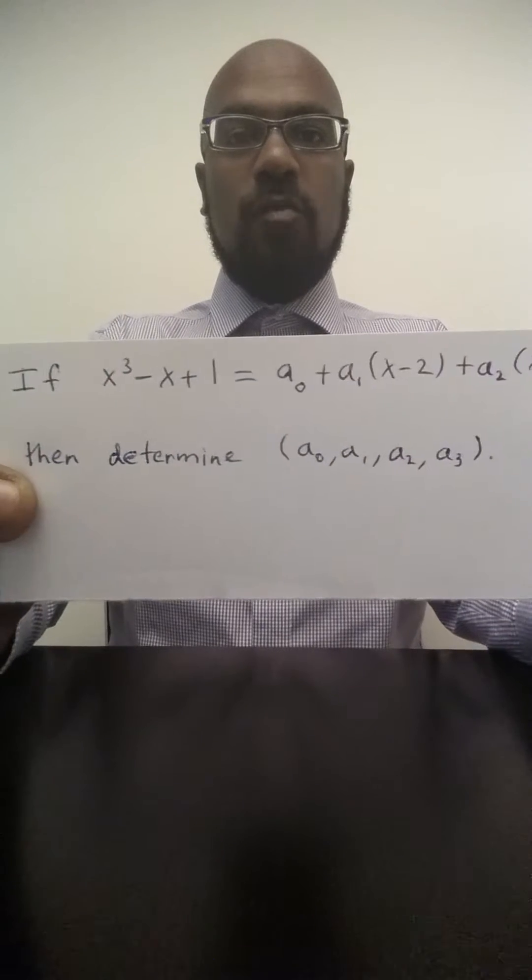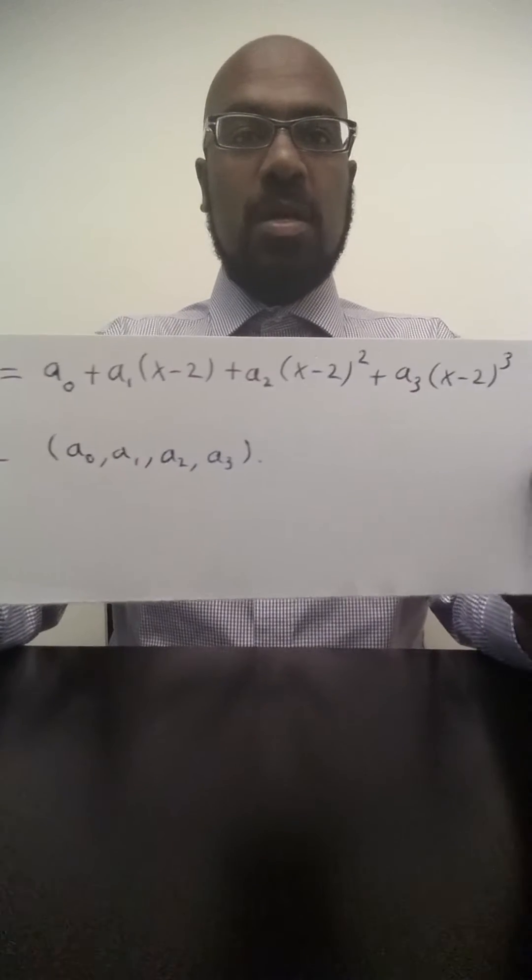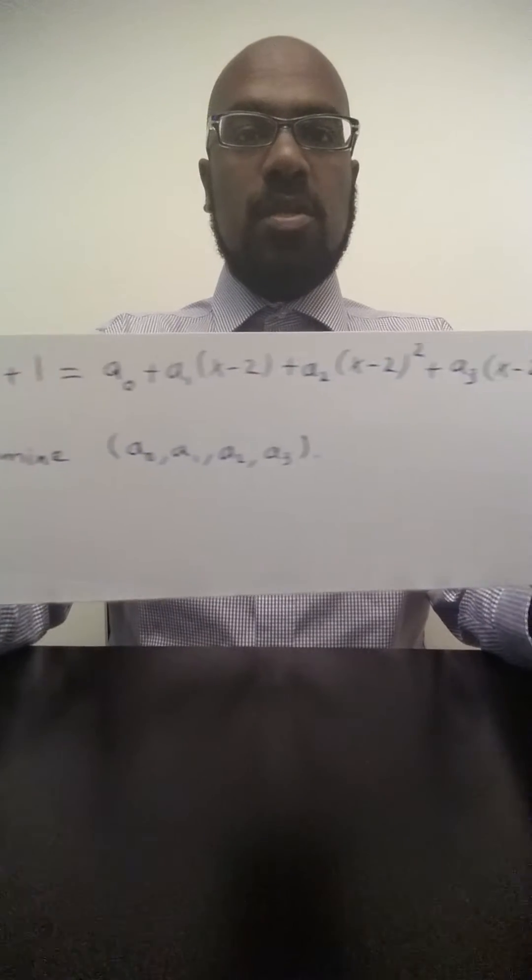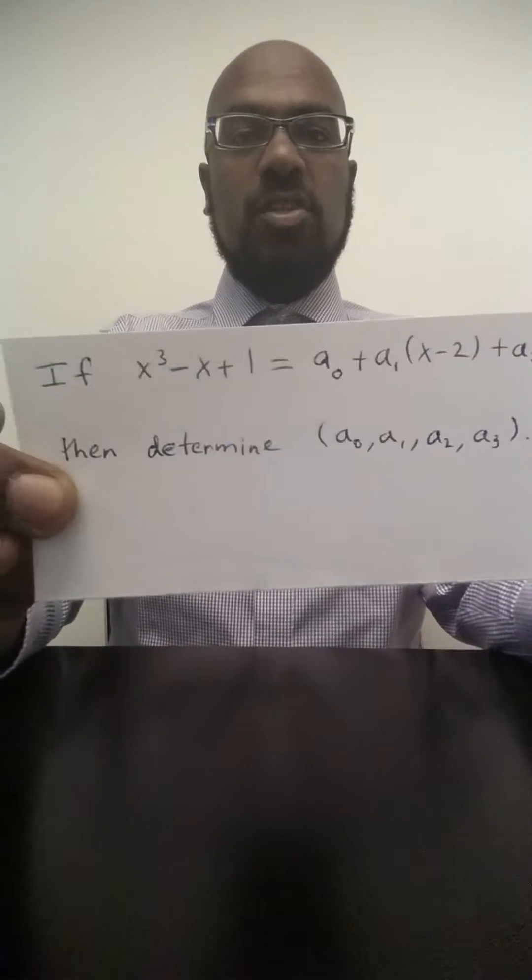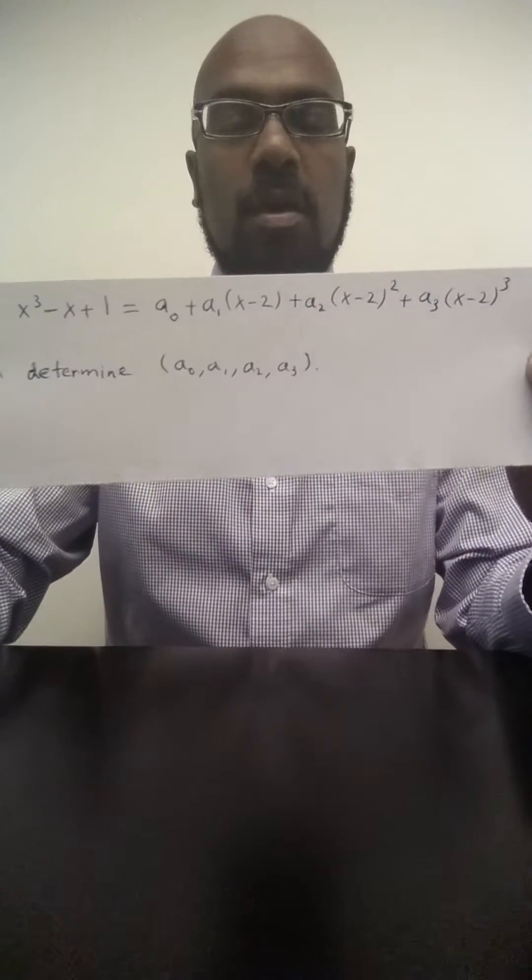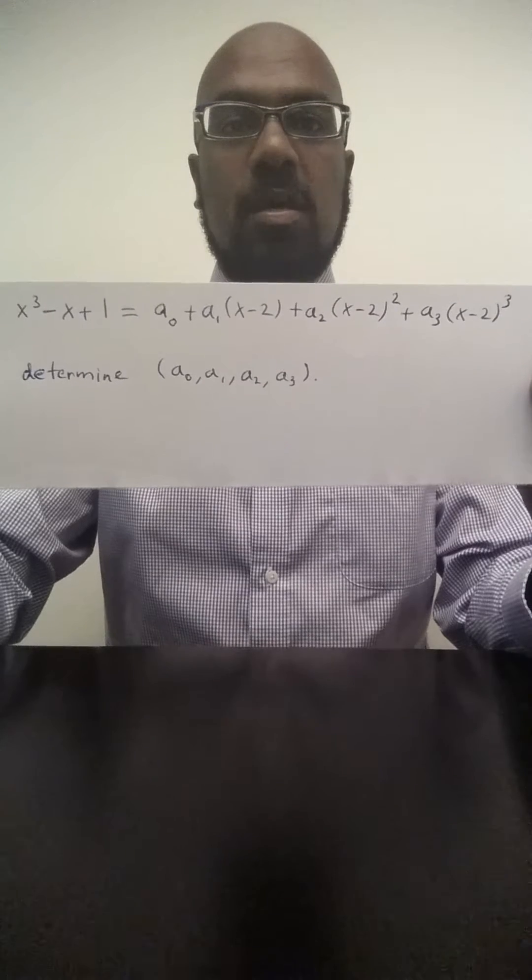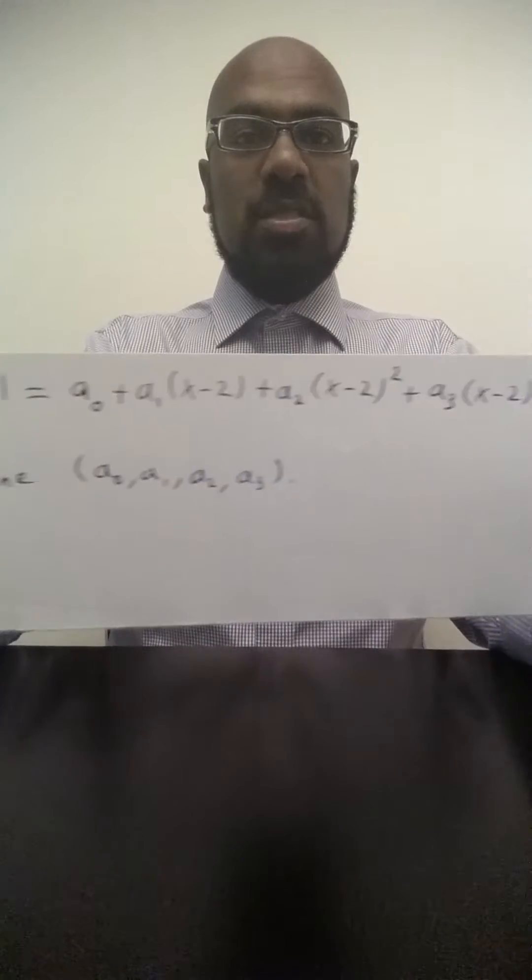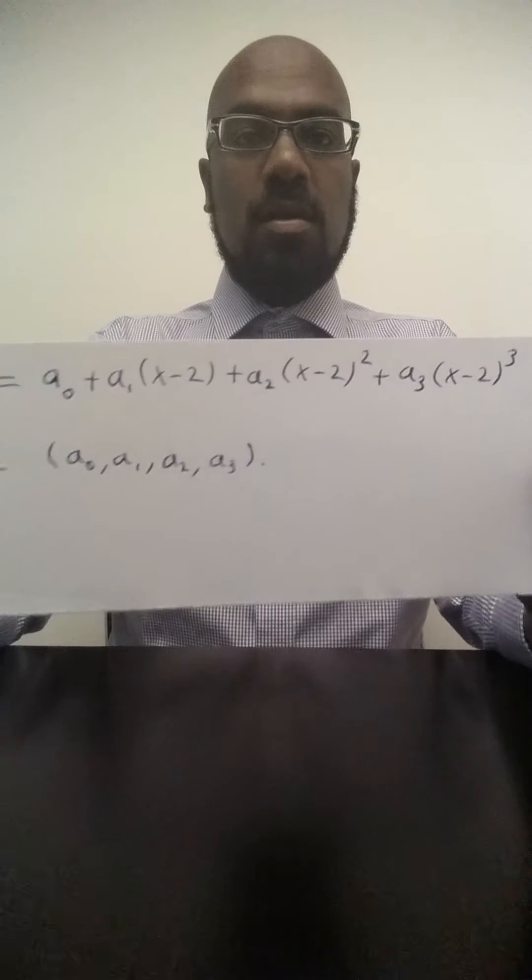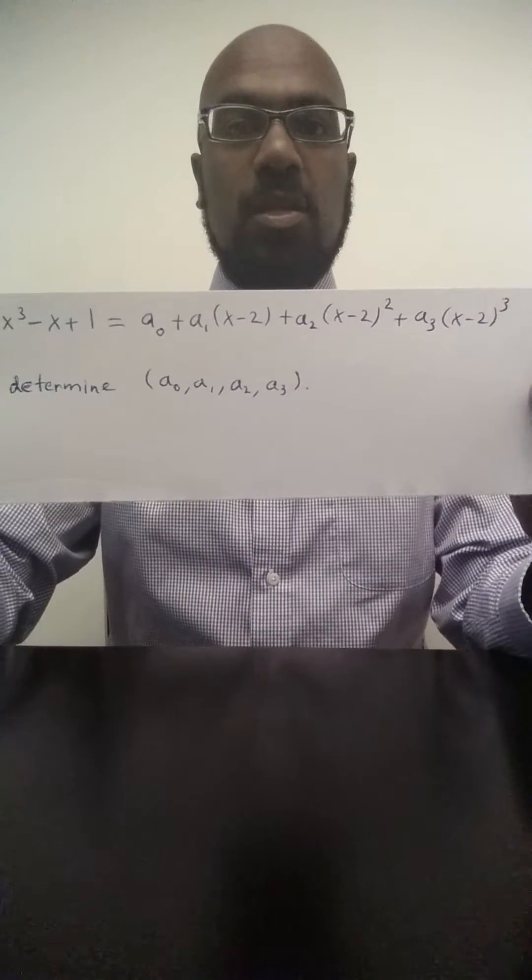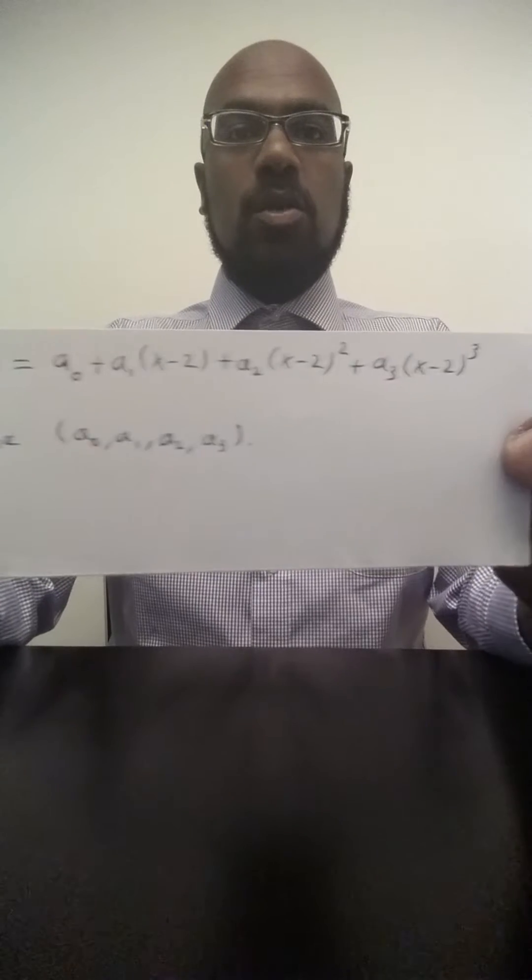And if I compare coefficients like the cubic term, the quadratic term, the linear term, and the constant term of each of these two sides, then I'll get a system of equations in four variables and four unknowns. The four variables being the coefficients a₀, a₁, a₂, a₃, those being the variables, and the equations coming from equating the coefficients.